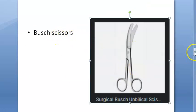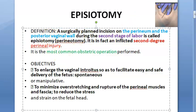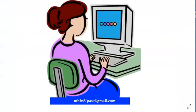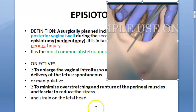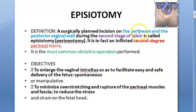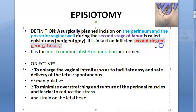So the instrument is called Busch scissors. Let's go back to the definition. It is a planned incision on the perineum and the posterior vaginal wall. From the posterior vaginal wall they are cutting, and also the perineum — that's why it's called perineotomy. The incision is on the perineum and the posterior vaginal wall during the second stage of labor, just before the baby is delivered. And it is a second-degree injury.